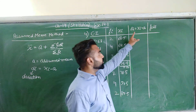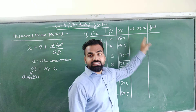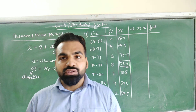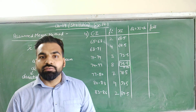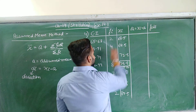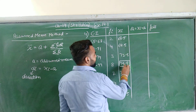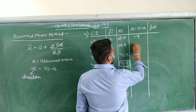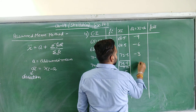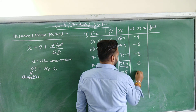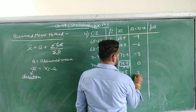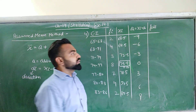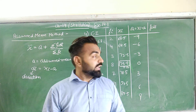Now we have to find dᵢ, which is xᵢ minus a. We subtract the value of a from every class mark. So: 66.5 − 75.5 = −9, then −6, −3, 0, 3, 6, and 9. These are the values of dᵢ.